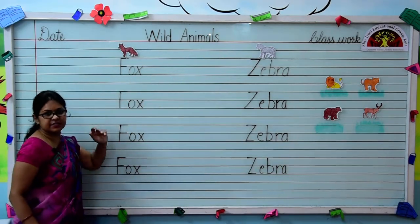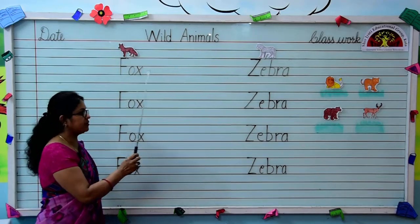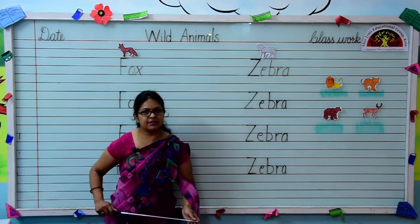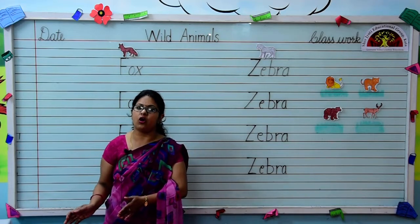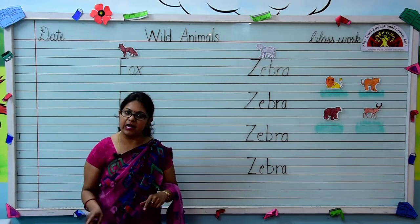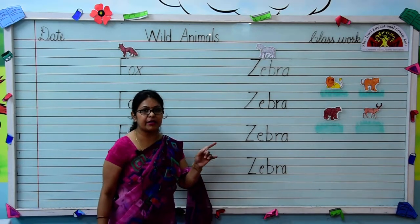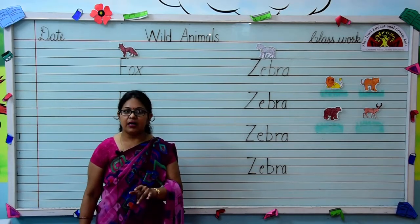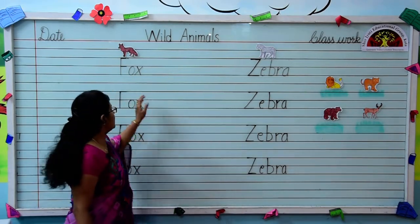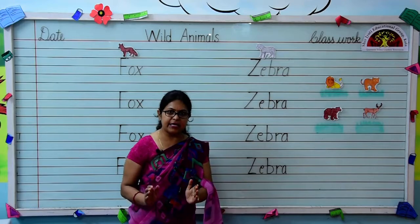So we will revise these spellings again. F-O-X, fox. Z-E-B-R-A, zebra. What is the spelling of lion? L-I-O-N, lion. T-I-G-E-R, tiger. The spelling of bear is B-E-A-R. And what is the spelling of deer? D-E-E-R, deer. What is the spelling of fox? F-O-X, fox. What is the spelling of zebra? Z-E-B-R-A, zebra.